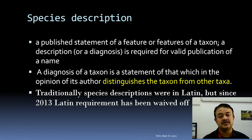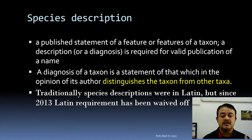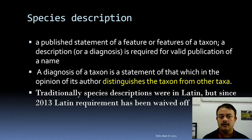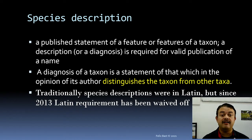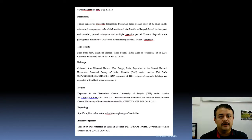Description covers the morphological characteristics and also ecology, habitat, and life cycle. Diagnosis, as I mentioned, is the features that distinguish that taxon from other closely related taxa. Traditionally, species descriptions were in Latin — that is why many old university botany departments had Latin specialists — but since 2013, the Latin requirement has been waived. Now you can write in English or any other language.